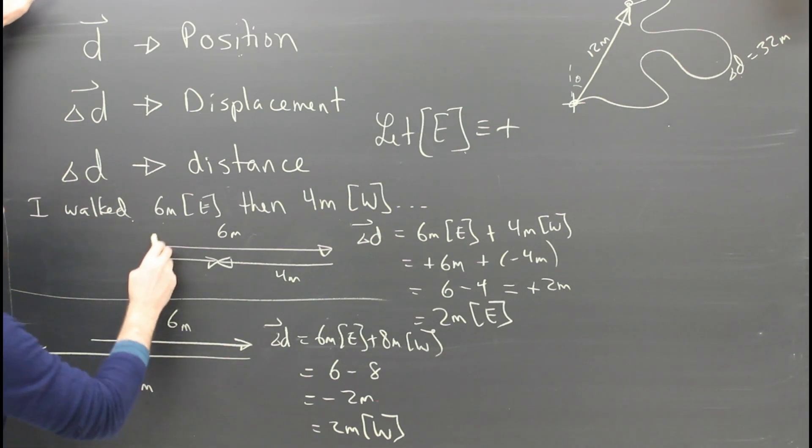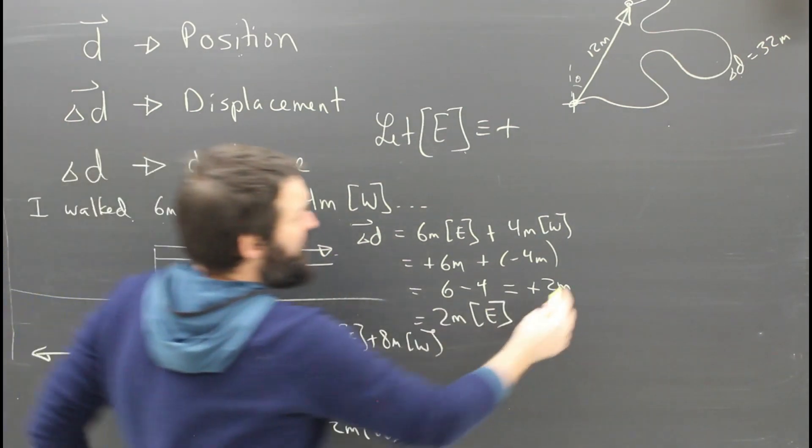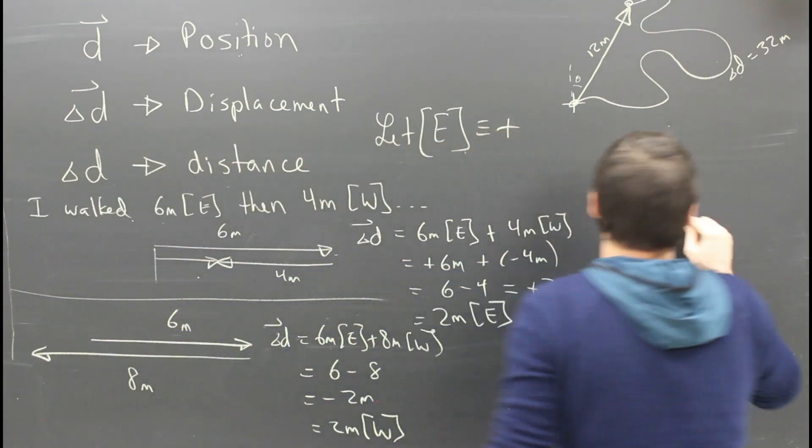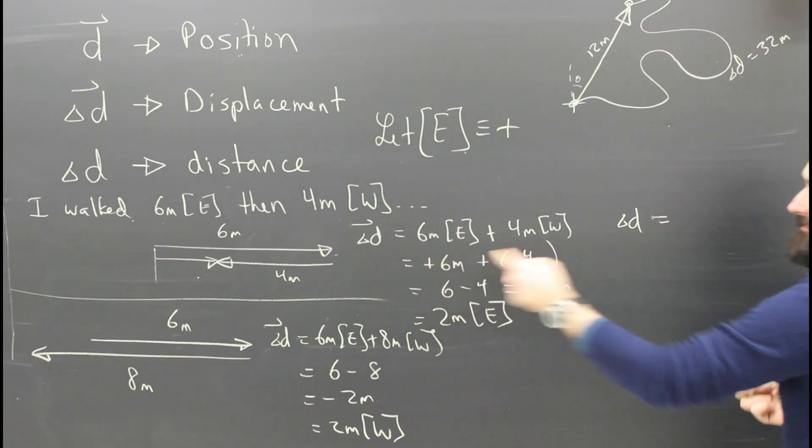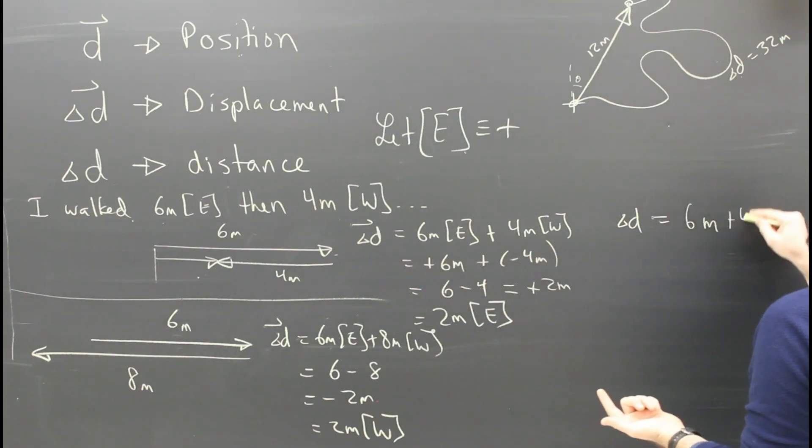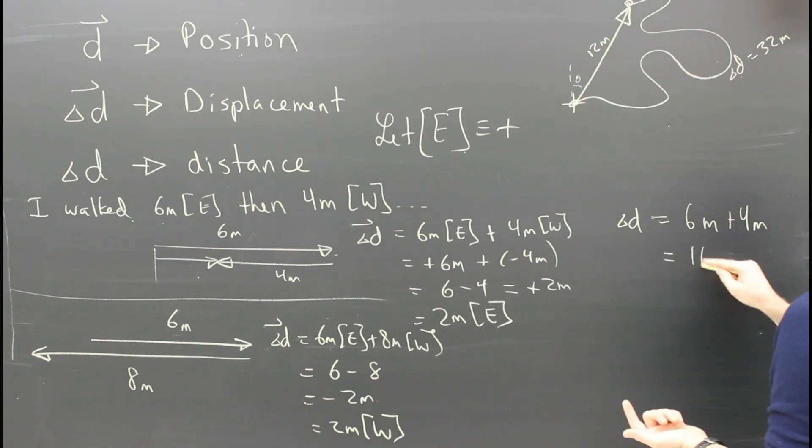So that's how you find the displacement. Going back to my first walk, I walked six then four. It's really easy, I think, to figure out my distance. I walked six then four. My distance is six meters plus four meters. It's just ten meters.